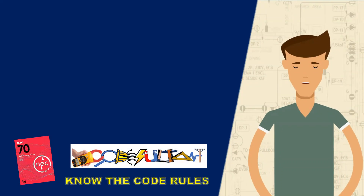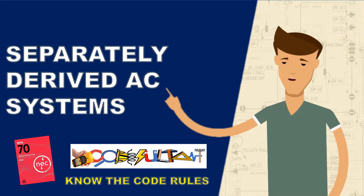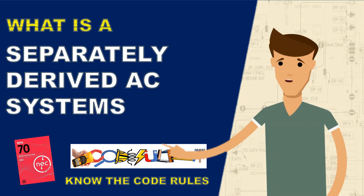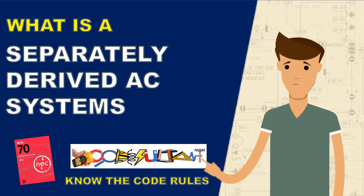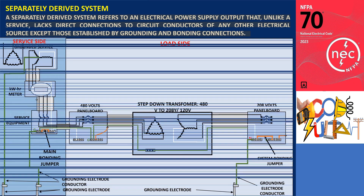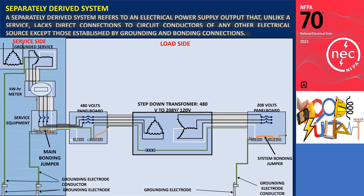Before proceeding to the following sections, let's ensure we understand what a separately derived system is. A separately derived system refers to an electrical power supply output that, unlike a service, lacks direct connections to circuit conductors of any other electrical source.